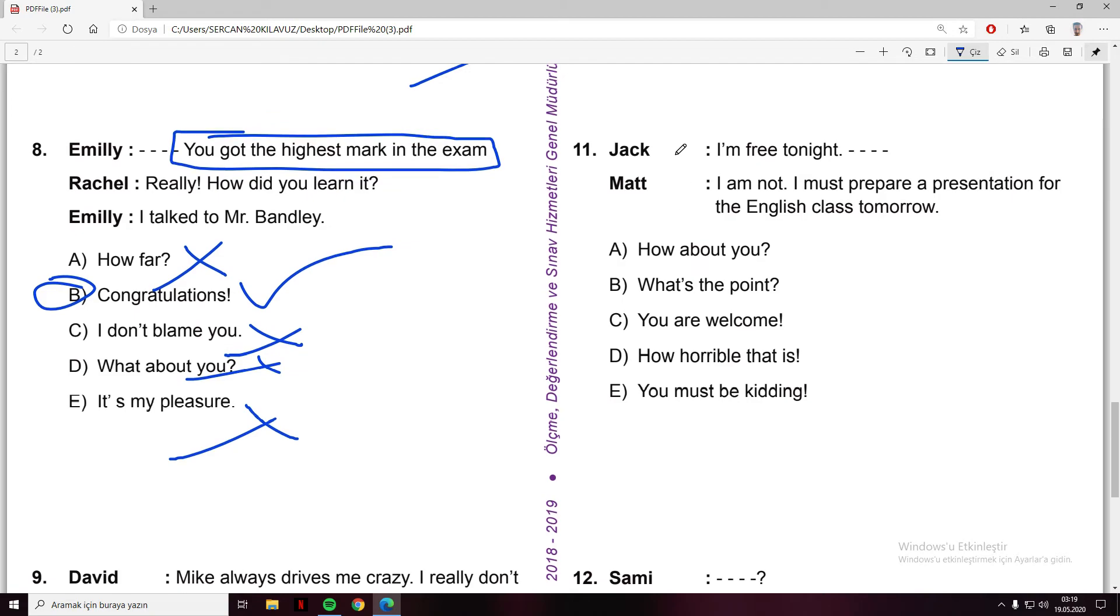Number eleven: Jack and Matt. I'm free tonight. Matt says I'm not, I must prepare a presentation for the English class tomorrow. What is our answer? How about you - yes, I'm free tonight, how about you. What's the point - no. You're welcome - no. How horrible - no. You must be kidding - no. The answer is A.